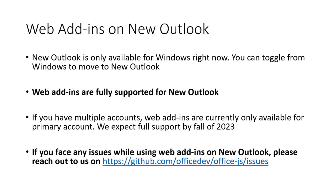You can start using it today if you have an account with Insiders. However, if you have multiple accounts on Outlook, web add-ins are currently available only for the primary account and will be disabled if you move to another account. We expect full add-in support for secondary accounts to come in by fall of 2023. This is a very good time to test out your add-ins on new Outlook because many of your users will start seeing this toggle. Please reach out to us if you face any issues using the GitHub link mentioned in the slide.